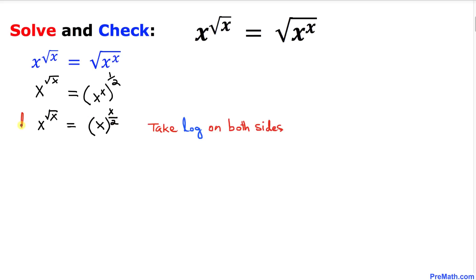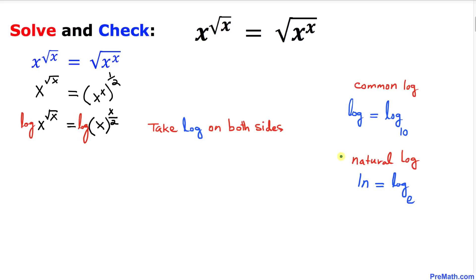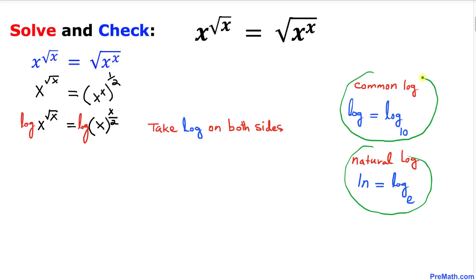Now let's go ahead and take the log on both sides. You might be wondering why I didn't take the natural log — it doesn't make any difference, our answer will be exactly the same. The one we are using is the common log, meaning the base is 10. The natural log has base e — that's the only difference.